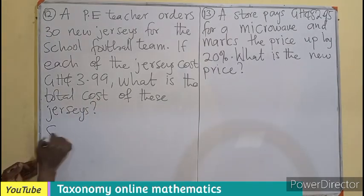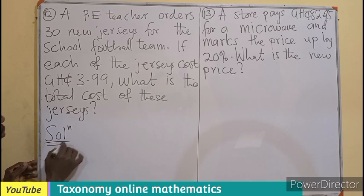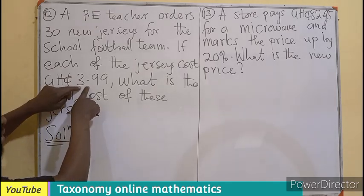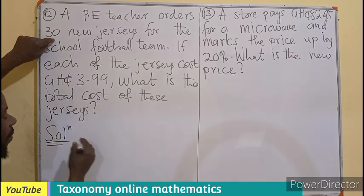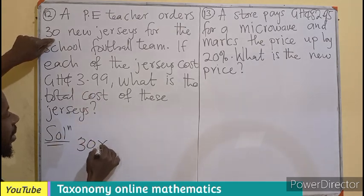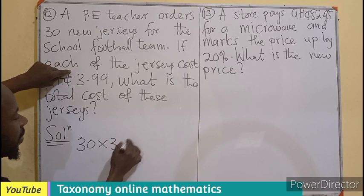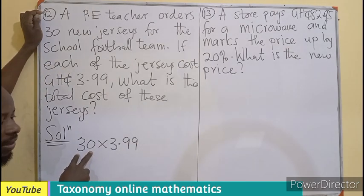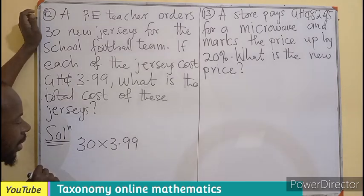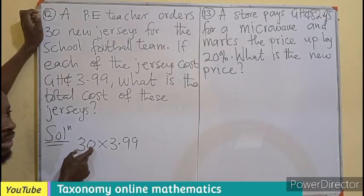What this simply means is that we are to multiply the cost of the jerseys by the number of jerseys we have, meaning 30 jerseys times 3.99 cedis. And we know this can be done on the calculator without any stress.